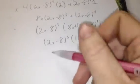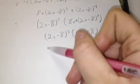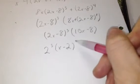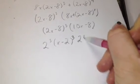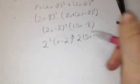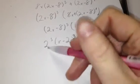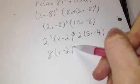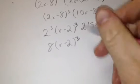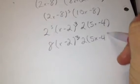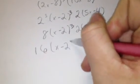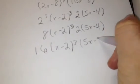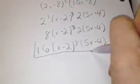You can still factor more out. Taking 2 raised to the third power out of 2x minus 8 raised to the third power gives x minus 2 raised to the third power. Then taking a 2 out of 10x minus 8 gives 2 times 5x minus 4. Combining, you get 8 times x minus 2 raised to the third power, so the final answer is 16 times x minus 2 raised to the third power, all times 5x minus 4.